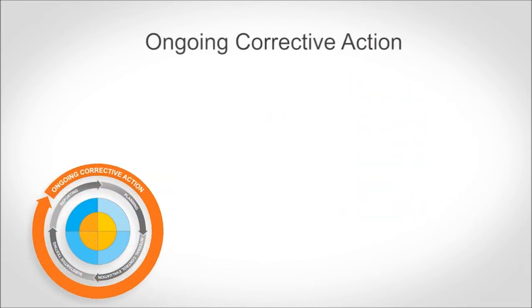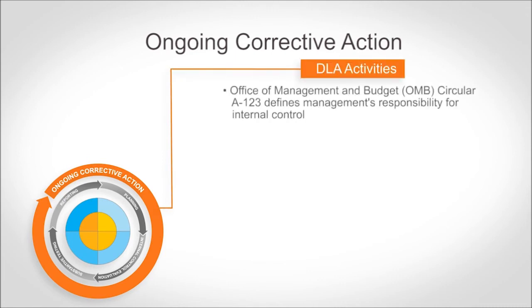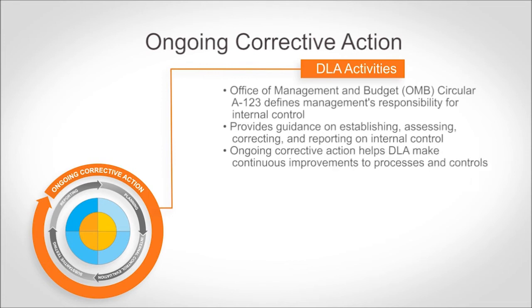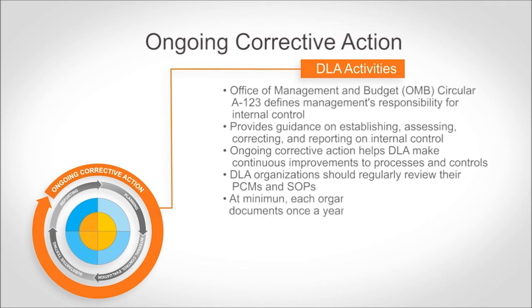Ongoing Corrective Action is an internal management function. OMB Circular A-123 defines management's responsibility for internal control for federal agencies, providing guidance on establishing, assessing, correcting, and reporting on internal control. Ongoing Corrective Action helps DLA make continuous improvements to its processes by reviewing recommendations and implementing changes. DLA organizations should regularly review their PCMs and SOPs and improve processes and key controls when necessary — at a minimum, each organization should review these documents once a year.